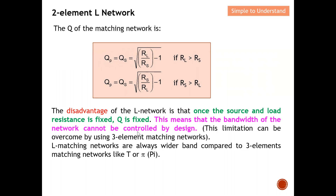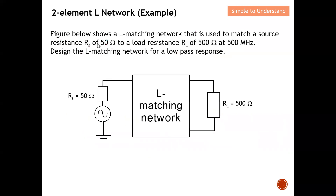This means the bandwidth of the network cannot be controlled by design, which is a key limitation of the L network. This limitation can be overcome by using a three-element matching network, which allows Q control. L matching networks always have wider bandwidth compared to three-element networks like T or pi, which have higher Q.